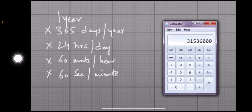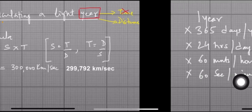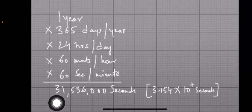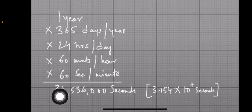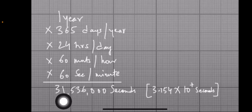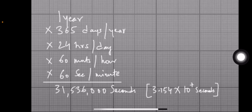If you multiply 365 × 24 × 60 × 60, you get 3 crore 15 lakh 36,000 seconds. Rounding off, that is approximately 3.154 × 10 to the power of 7 seconds in a year.